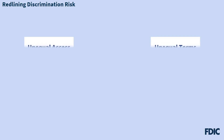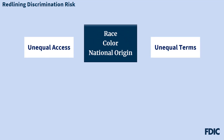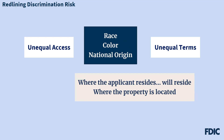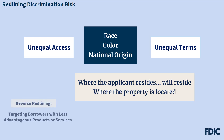Redlining is when a lender provides unequal access to credit or unequal terms of credit because of the race, color, national origin, or other prohibited characteristics of the residence of the area in which the applicant resides or will reside, or where the property is located. The term reverse redlining is used to describe the practice of targeting certain borrowers or areas with less advantageous products or services on a prohibited basis.